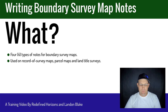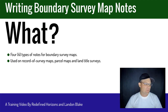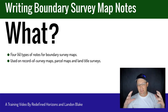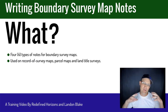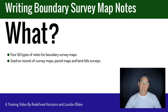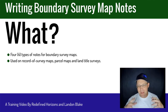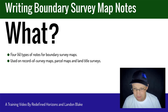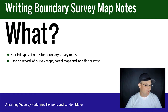In this video we're going to talk about four types of notes that go on boundary survey maps. At my shop, Refined Horizons, that means a record survey map, a parcel map, or a land title survey. If you work in a different kind of shop it might be a land net, parcel fabric, right-of-way mapping, or subdivision mapping. But really, these kinds of notes could and probably should go on any type of boundary survey.